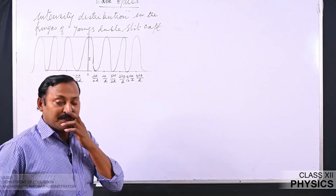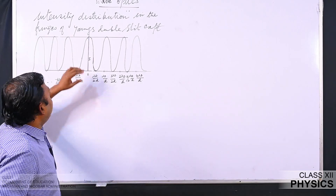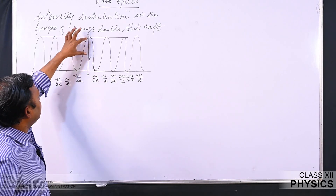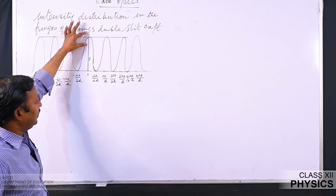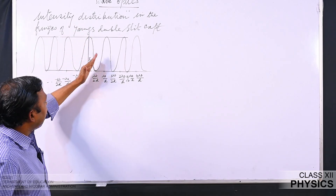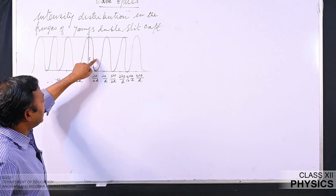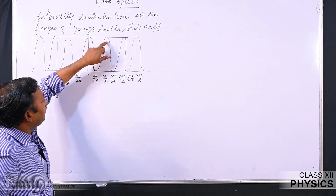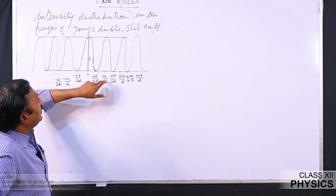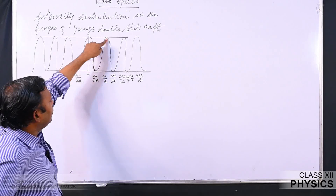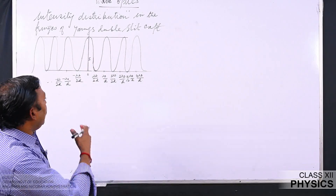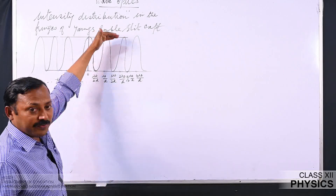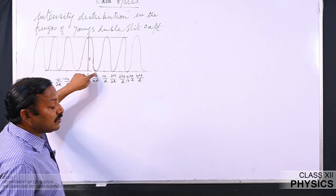Next we will see the intensity distribution in Young's double slit experiment. The graph is drawn between intensity and the distance of the fringes. For the central fringe we have maximum intensity; the next fringe after the central fringe is a dark fringe, so its intensity corresponds to zero. After that, the first maxima located at distance lambda·D/d has maximum intensity again.